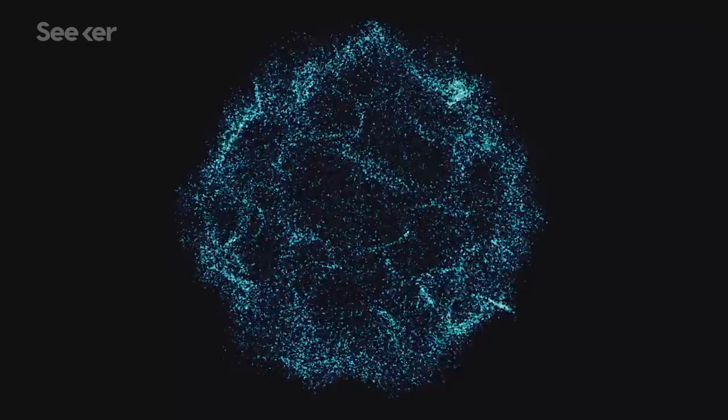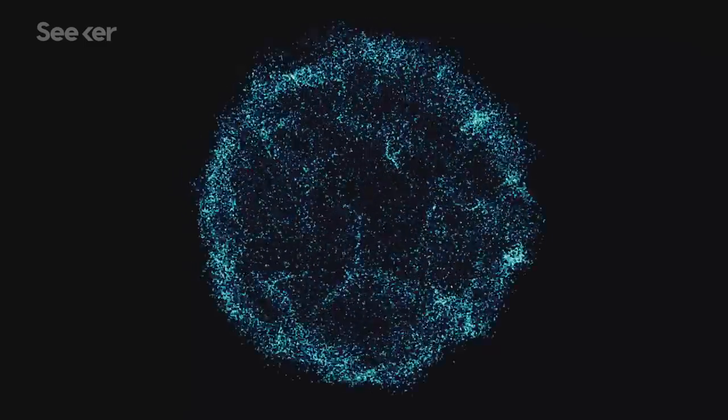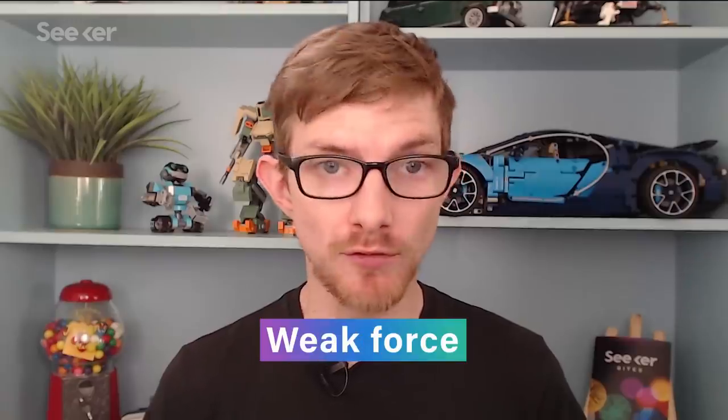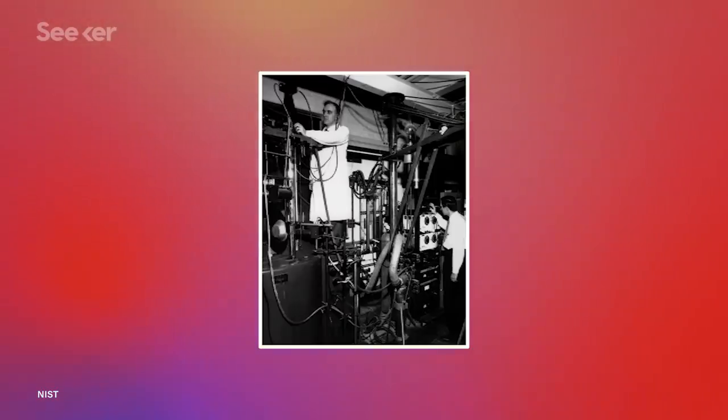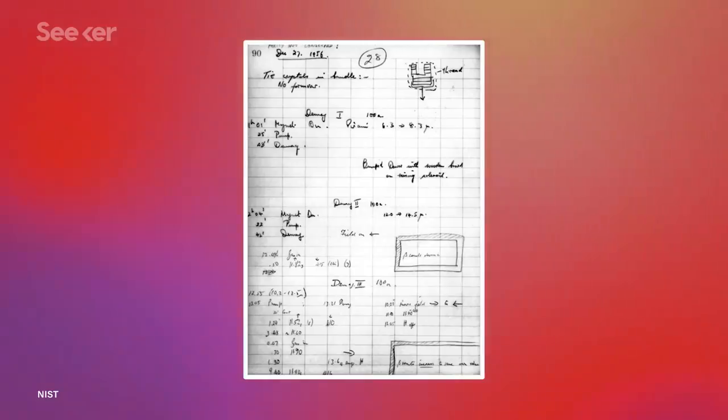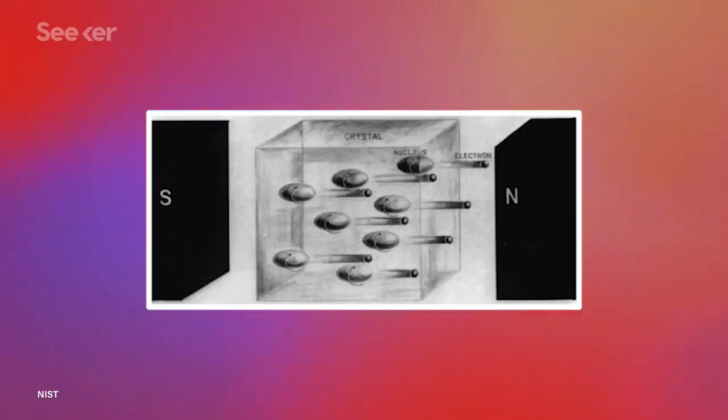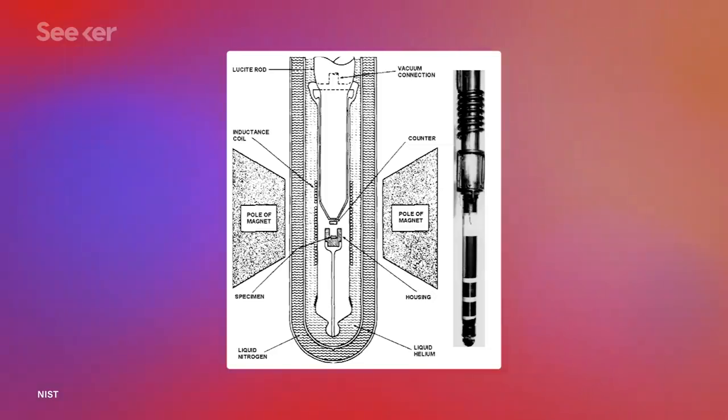If our hypothetical unstable particle were instead to undergo radioactive decay mediated by the weak force, then its mirror image version wouldn't behave symmetrically every time. It would violate P-symmetry. This was first observed in 1956, back when we thought parity conservation was the law. So you can imagine it was quite a shock when scientists observed two arrangements of cobalt-60 decaying differently.